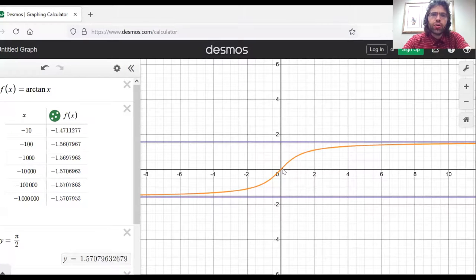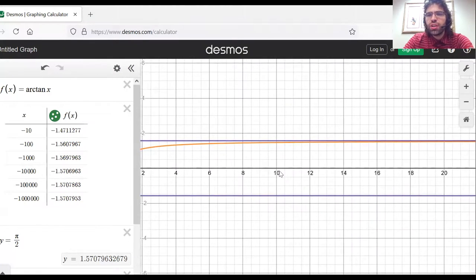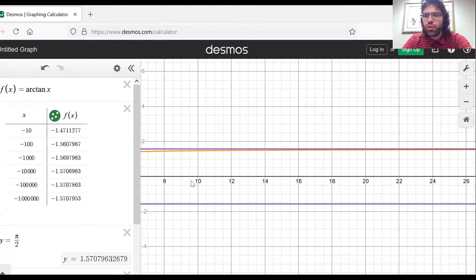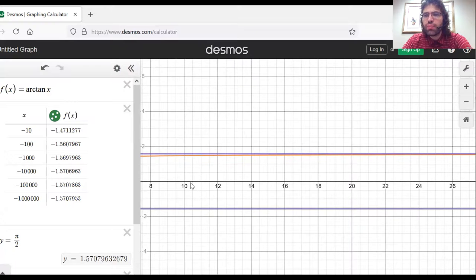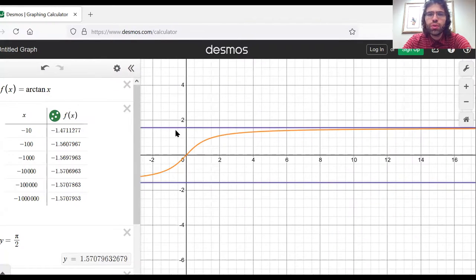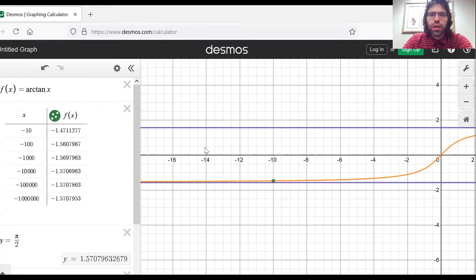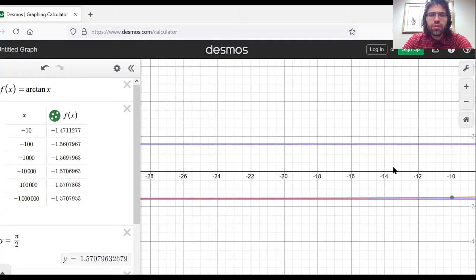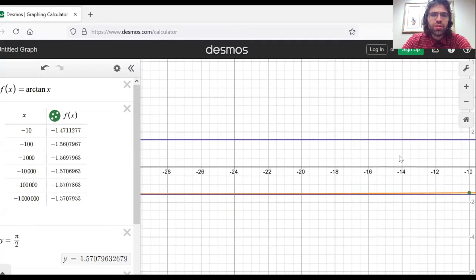And here is the arc tangent. And here's pi over two. You see this is a horizontal asymptote at pi over two. And likewise, here's the horizontal asymptote at negative pi over two.